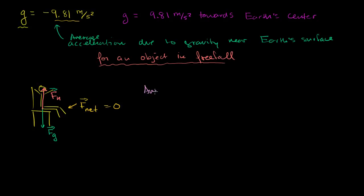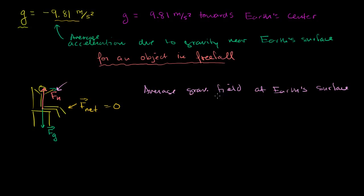So another way to view this is as the average gravitational field at Earth's surface. We'll talk about what a field means in the physics context in a second. A field — the average gravitational field at Earth's surface — is a little bit more abstract, but it does help us think about how g is relevant even when I am not an object in free fall. A field, in the physics context, is just something that associates a quantity with every point in space.